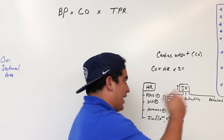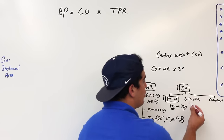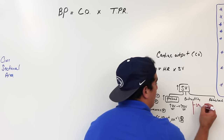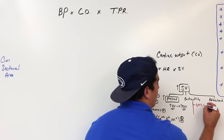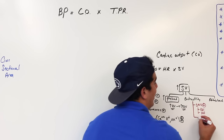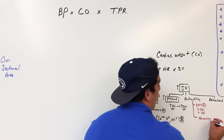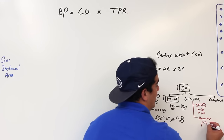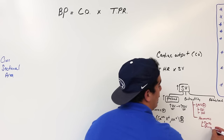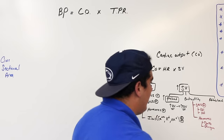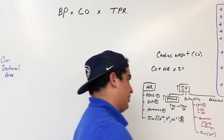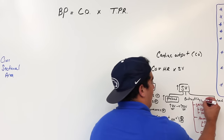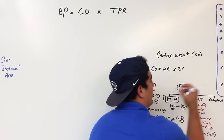The second component is contractility, which is dependent upon the sympathetic nervous system — specifically through epinephrine and norepinephrine. It can also be affected by hormones like glucagon and thyroxine (T3 and T4), and by ions like calcium. Whenever there is an increase in contractility, there is an increase in stroke volume.